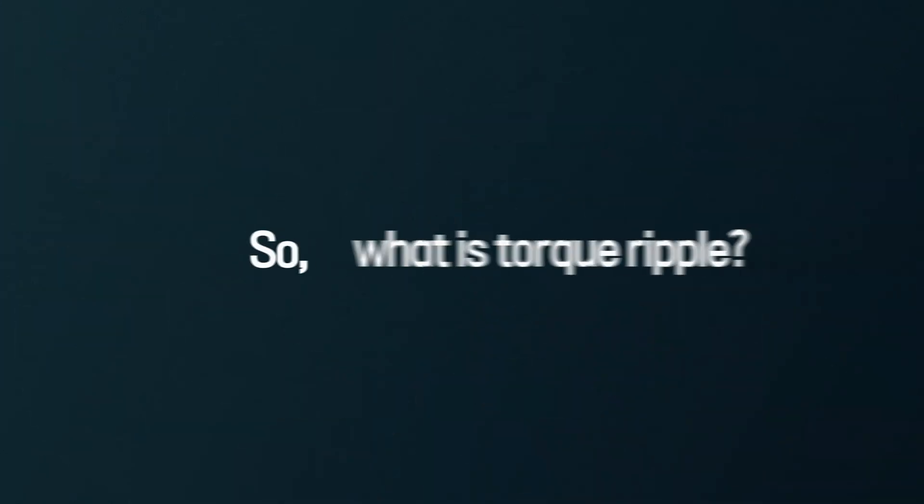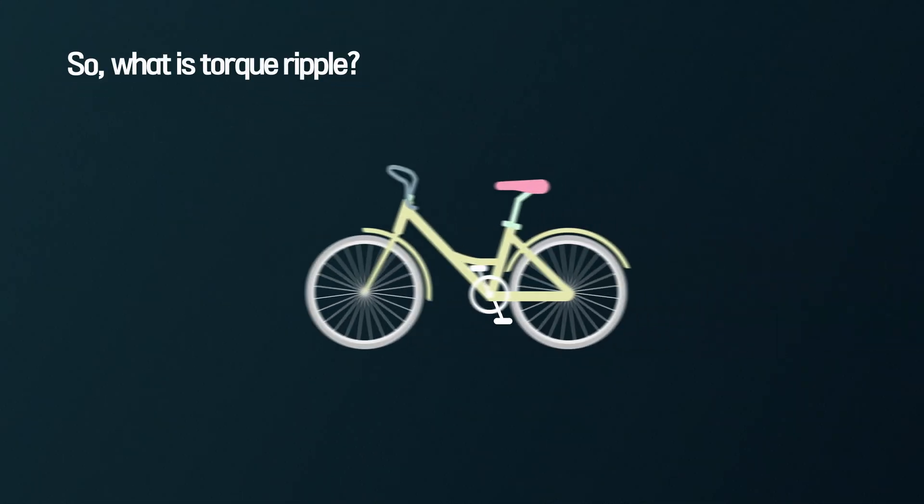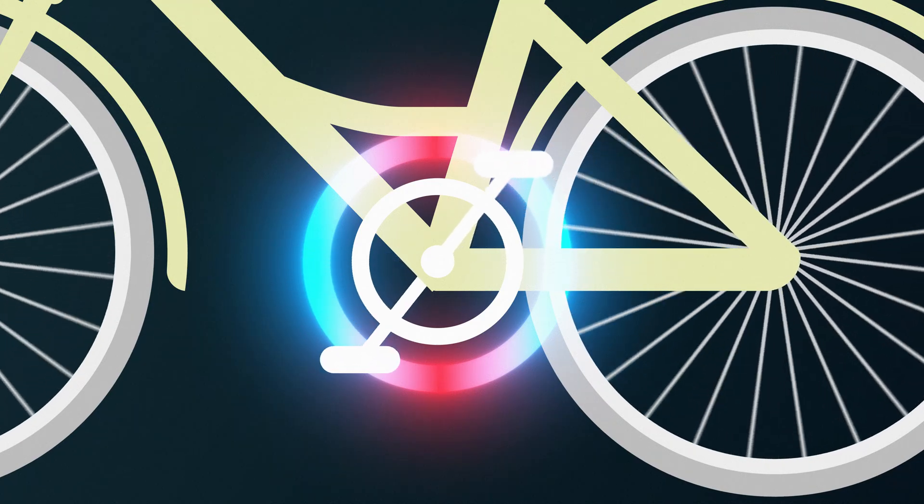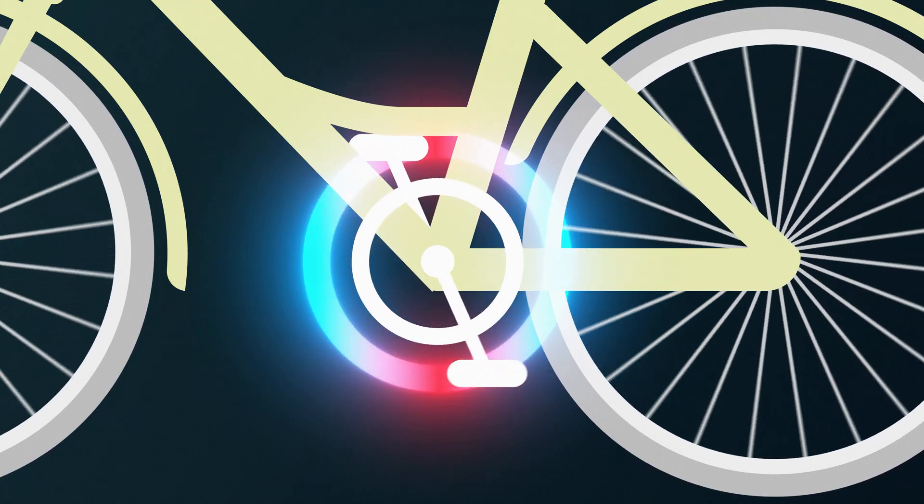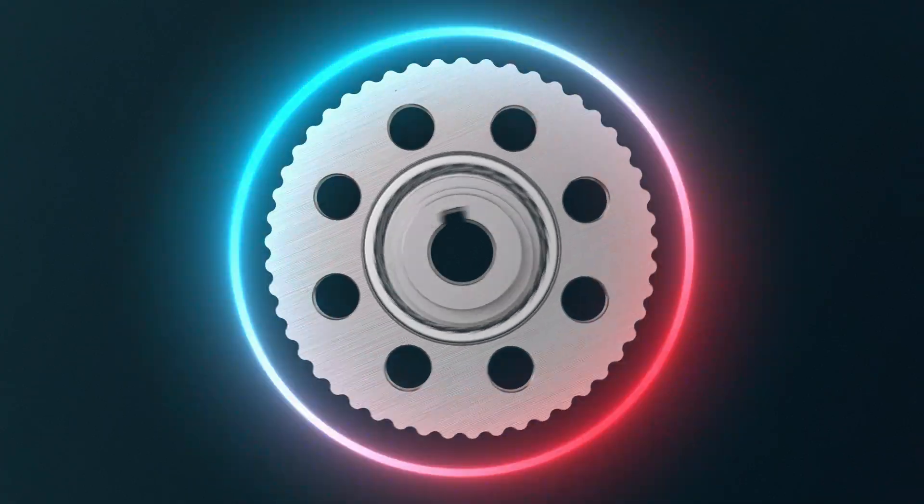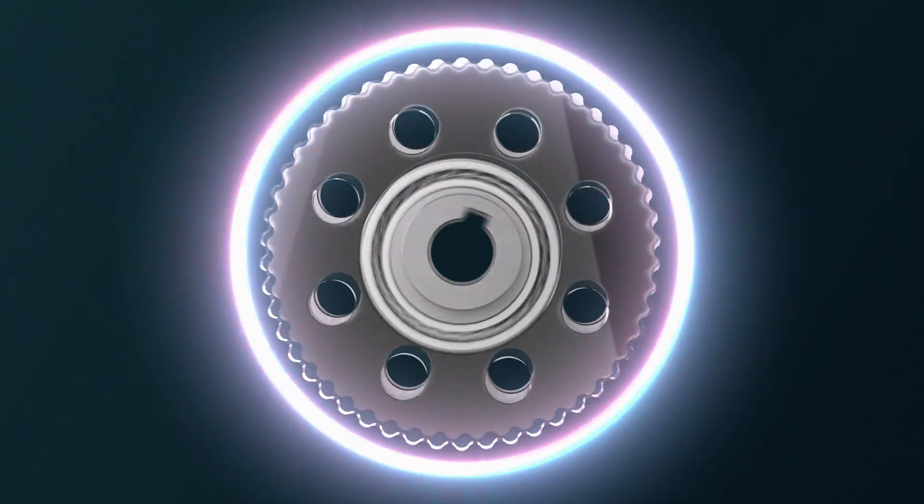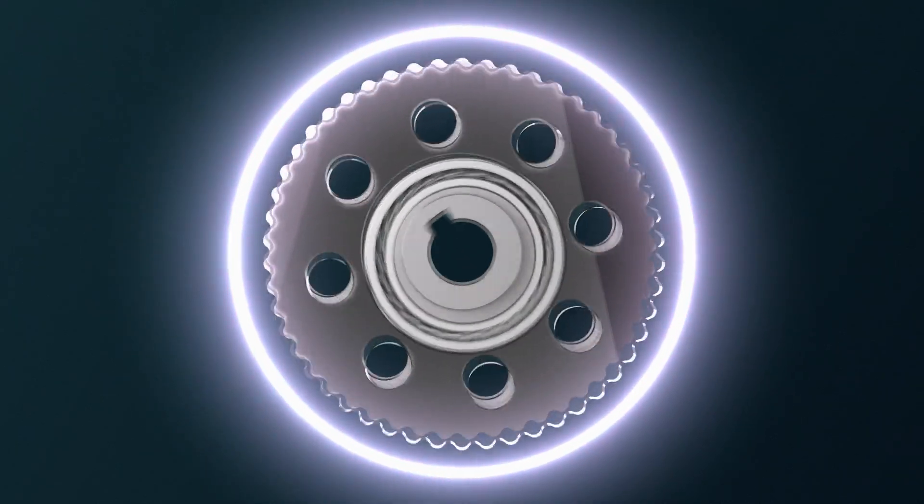So, what is torque ripple? Think about riding a bicycle. When the pedals are at the top or bottom, it's harder to push. But when they're horizontal, it's much easier. That uneven delivery of force is what we call torque ripple. Using two cycloidal discs helps eliminate that issue.